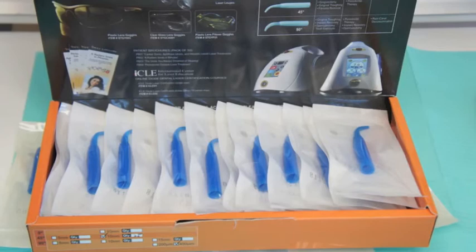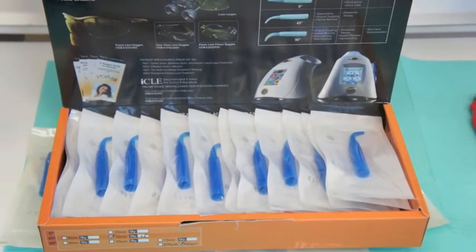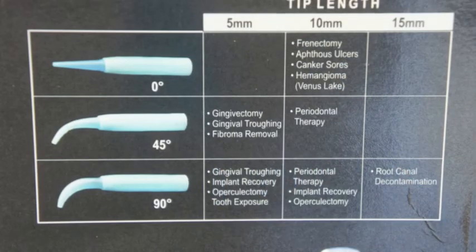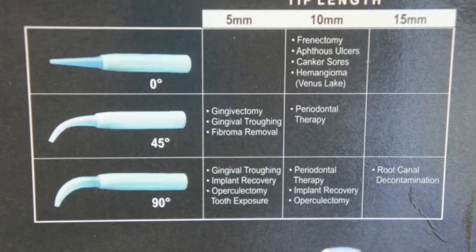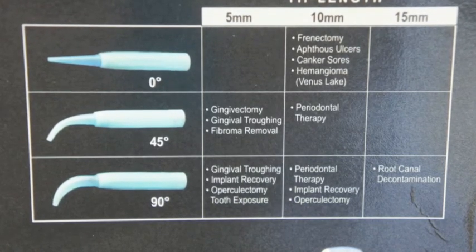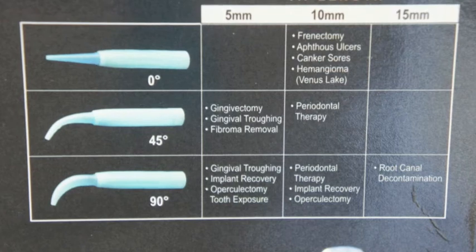They can come in 0, 45, and 90 degree shapes. The lengths are 5 to 10 millimeters. The anterior can be used for the front for canker sores and oral lesions. The 45 and 90 degrees are used in the posterior of the mouth.